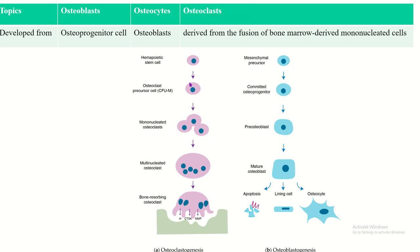This diagram shows the development of the osteoclast. From the hemopoietic stem cell, the osteoclast precursor cell is formed. Mononucleated osteoclasts fuse with each other to form the multinucleated osteoclast. This picture shows the bone-resorbing function of the osteoclast.